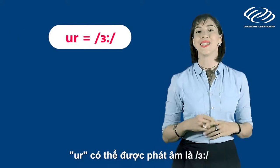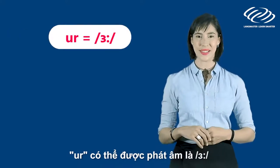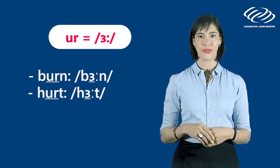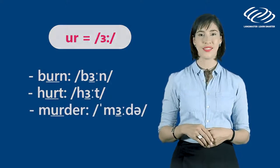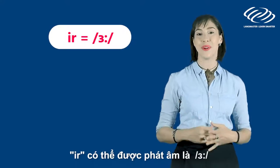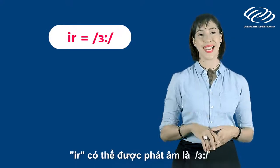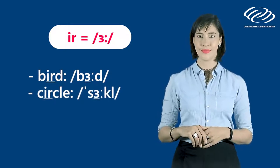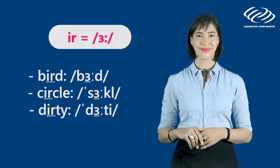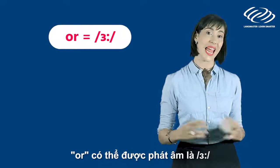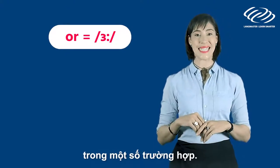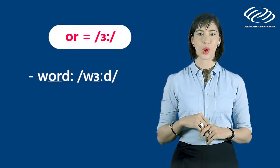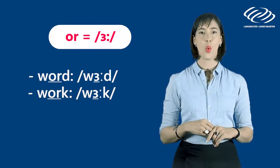U-R is pronounced as E-R. Let's take a look at these examples: burn, hurt, murder. And I-R can also be pronounced as E-R in the following cases: bird, circle, dirty. And O-R can be pronounced as E-R in some cases, such as: word, work, worse.